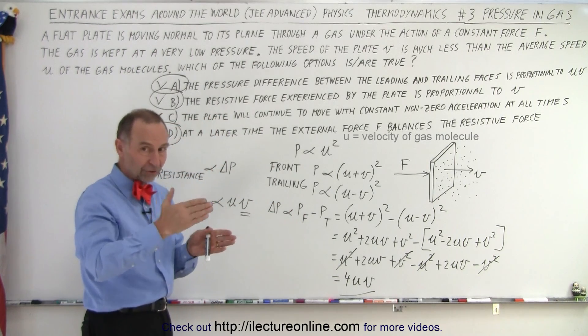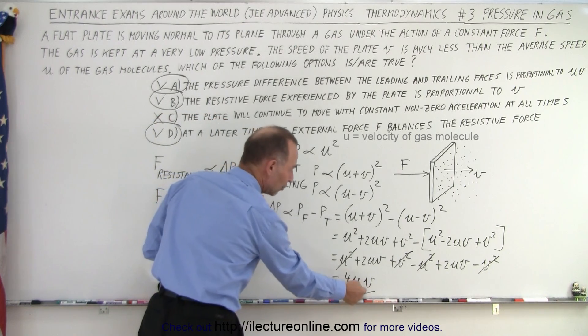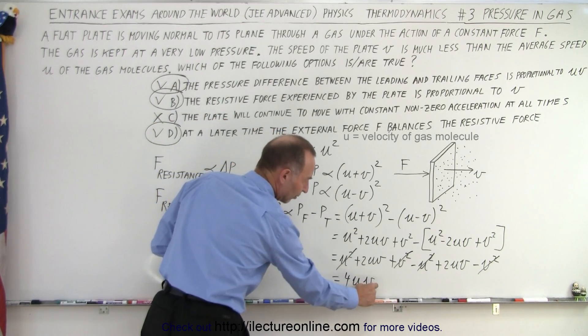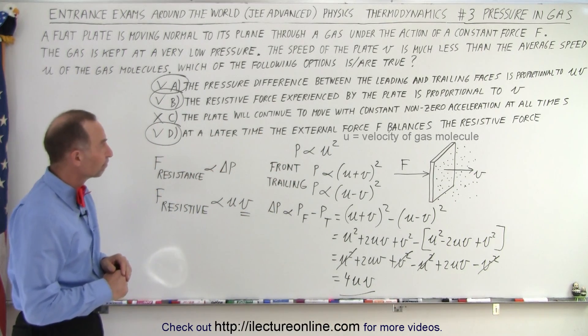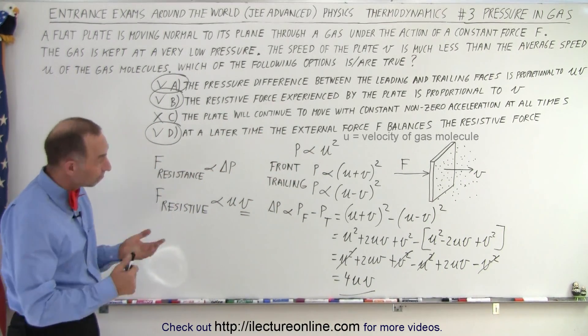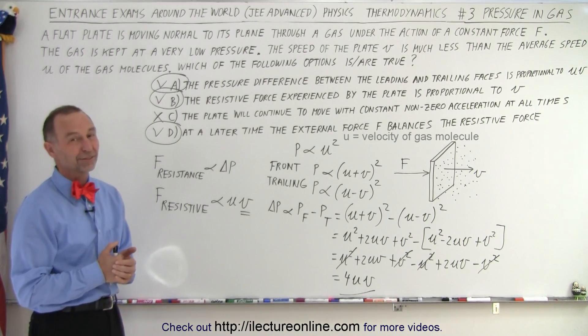And so the pressure difference increases as you go faster and faster. It is equal to 4 times UV. Since U is a constant and 4 is a constant, it's proportional to V actually. That's how it's done. Interesting problem. And I think you can do this one in 3 minutes.